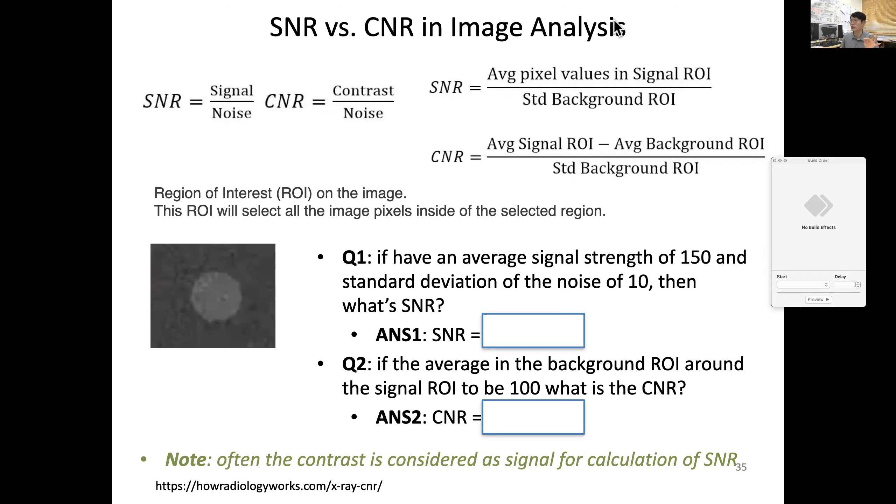What about contrast-to-noise ratio? Exactly the same, but instead of signal, you have to subtract the background average, which gives you the contrast. Does it make sense?